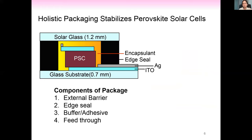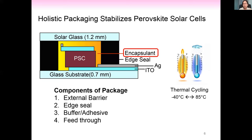To prevent degradation, a package was designed with four key components: the external barrier, the edge seal, buffer, and feed-through. Multiple modifications were made from the original glass-glass packaging proven for silicon to encapsulate perovskite. Mechanical robustness is a primary concern. First, perovskite active layers have the lowest fracture energy compared to silicon and organic cells — requiring only 0.2 J/m² to pull apart, comparable to a scotch tape peel. Second, mismatches in thermal expansion coefficient can cause adjacent layers to delaminate during thermal cycling.